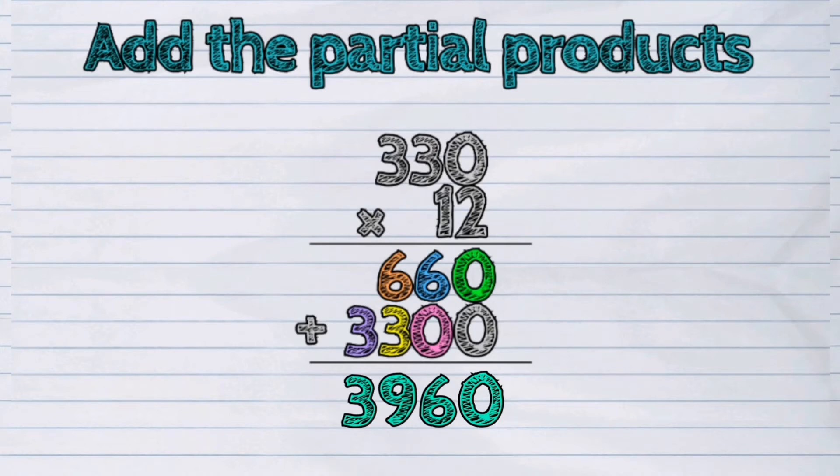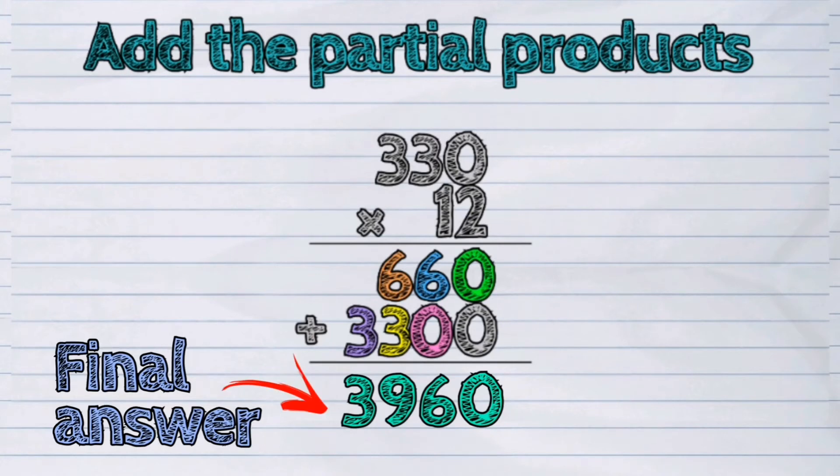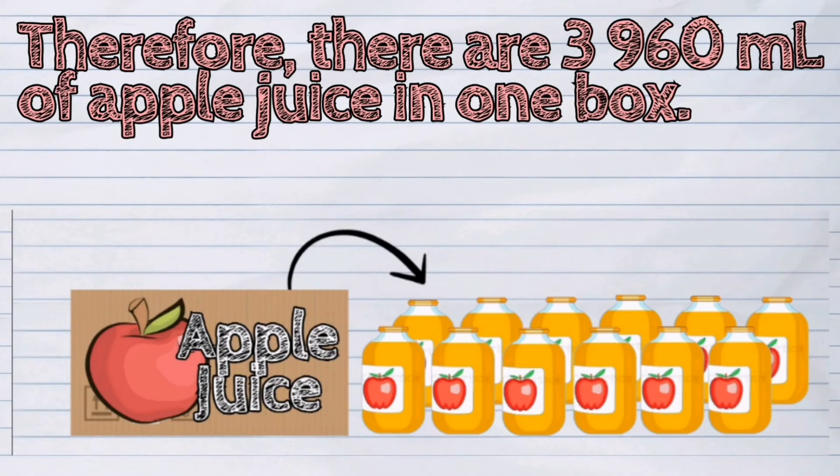And 0 plus 3 is 3. So, the final answer is 3,960. Therefore, there are 3,960 ml of apple juice in one box.